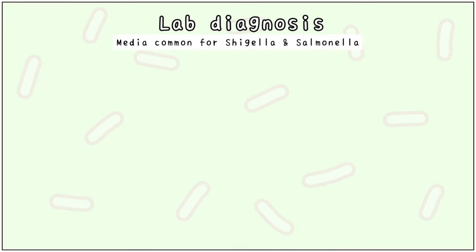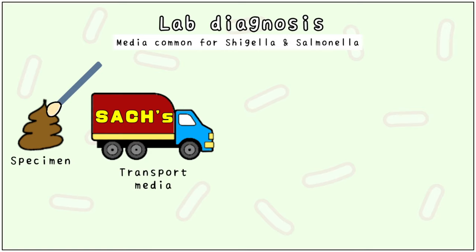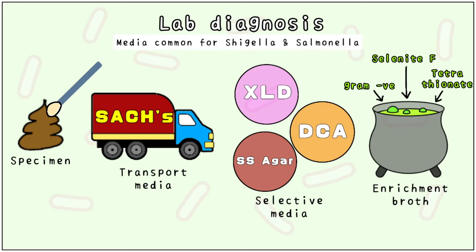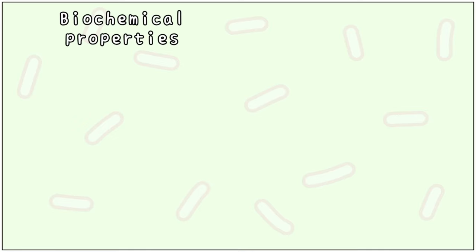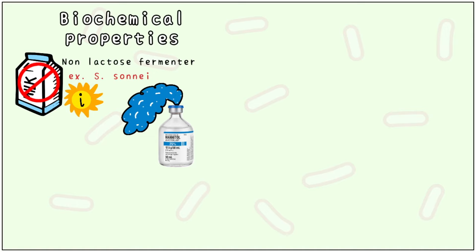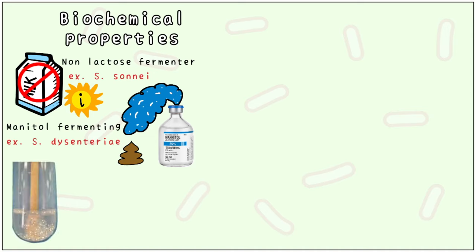For the laboratory diagnosis of Shigella, we use media common with Salmonella. The specimen is collected from a stool sample and transported in SACS medium. It is cultured using selective media: DCA, XLD, and SS agar. It is enriched using gram-negative broth, tetrathionate broth, and selenite F broth. A few important biochemical properties of Shigella are non-lactose fermenting, with the exception of S. sonnei. It is mannitol fermenting and catalase positive, the exception for both being S. dysenteriae.